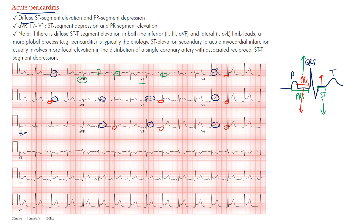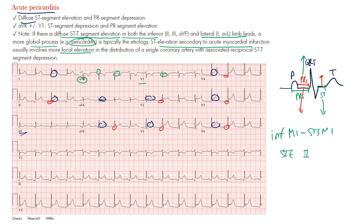What we want to be aware of is not confusing this with an ST elevation MI. If there's diffuse ST segment elevation in both the inferior and the lateral limb leads — a more global process — pericarditis is more likely. In a STEMI, the elevation is usually more focal, localized to a single artery distribution. For example, in an inferior STEMI you'd expect ST elevation in leads 2, 3, and AVF.